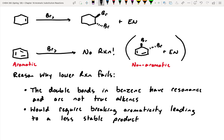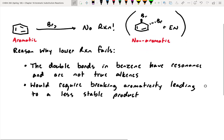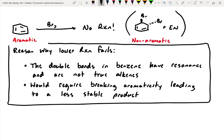This would require breaking aromaticity leading to a less stable product. In order for a reaction to be spontaneous we typically are going to make a product that is more stable than our starting material. Otherwise the reaction just simply wouldn't occur. Another reason is that the double bonds in the aromatic ring aren't very good nucleophiles, again due to resonance. So this kind of summarizes why the reaction shown above fails.